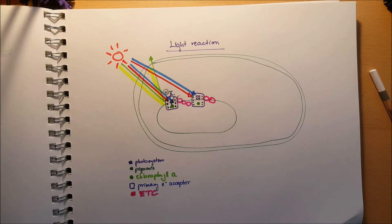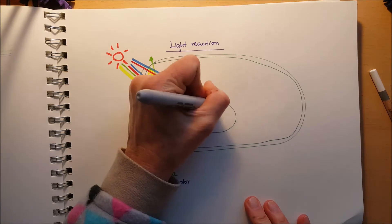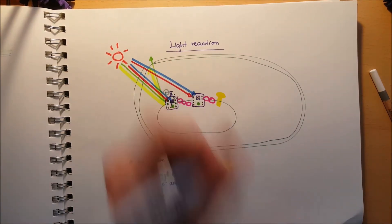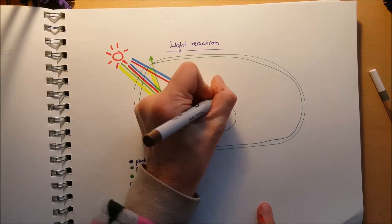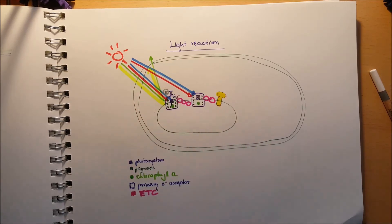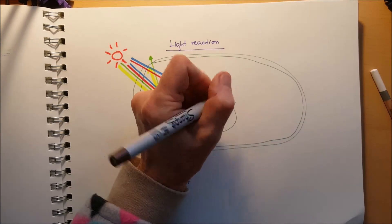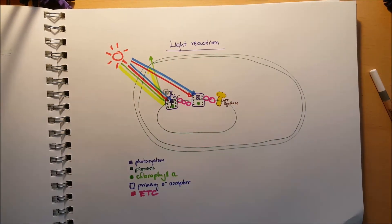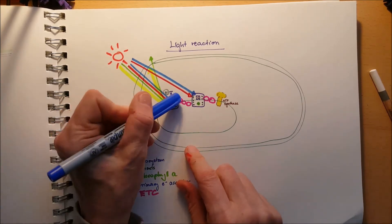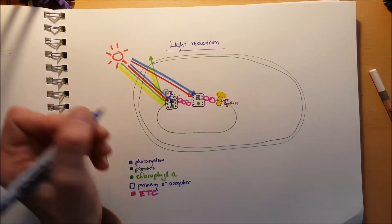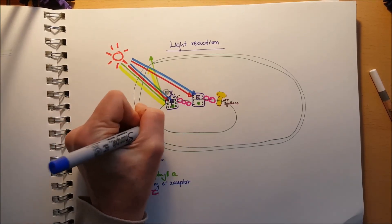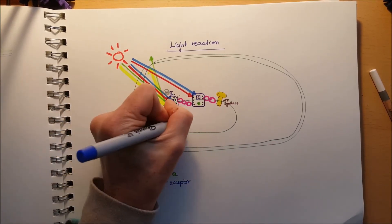And at the end, we have an ATP synthase. This is the ATP synthase, the good old one that we had in the cellular respiration. Remember, that's pretty much similar to it. And now you would just ask, if the electron got lost from the chlorophyll A, where would it get back its electron?